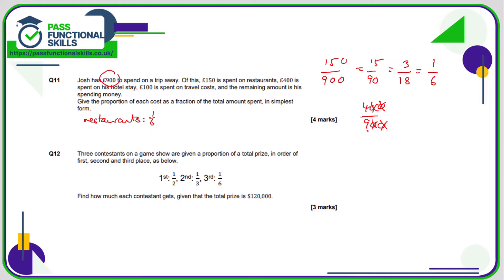Let's look at travel. That's 100 out of 900, otherwise known as 10/90, otherwise known as one ninth. So travel is one ninth.